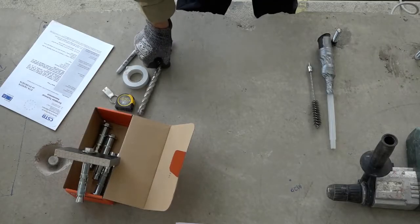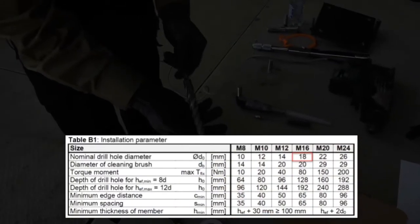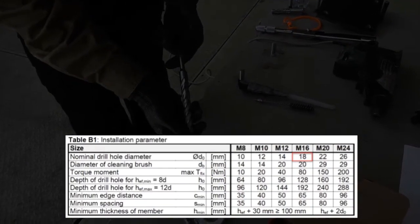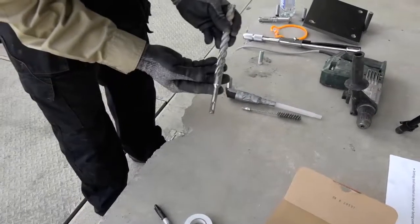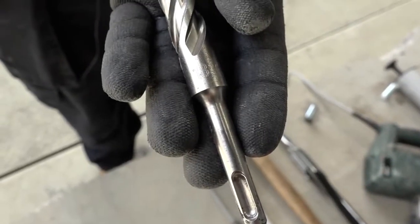The correct size drill bit. In this case, for this product, we need an 18 millimetre diameter drill bit. And we can confirm here on the drill bit that it's 18 millimetres diameter.